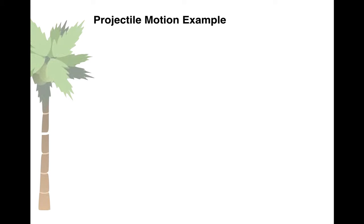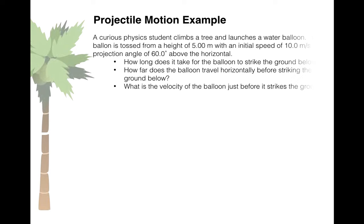In the last video, we looked at an example of projectile motion in which the projectile had an initial velocity that was completely horizontal. In this video, we'll look at an example of projectile motion where the initial velocity is at an angle.